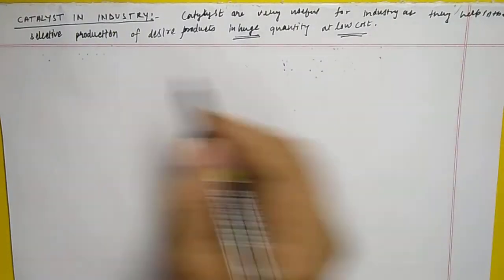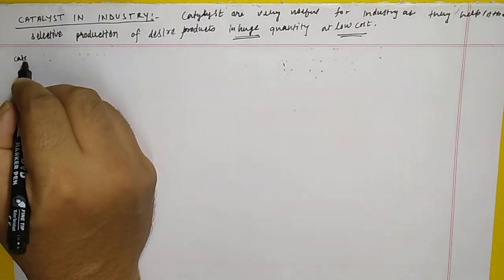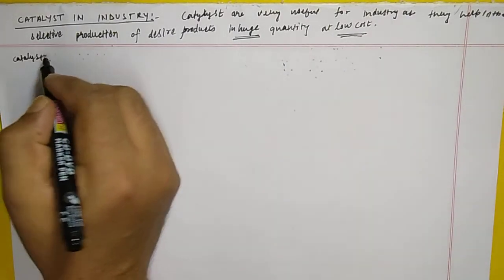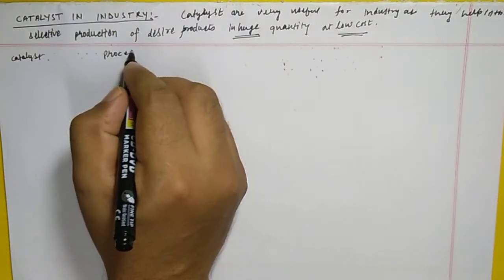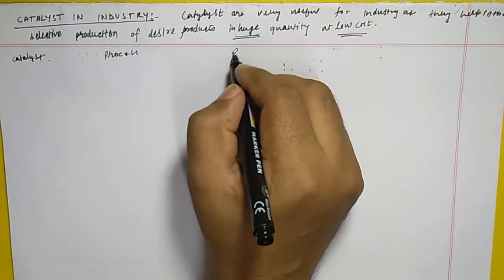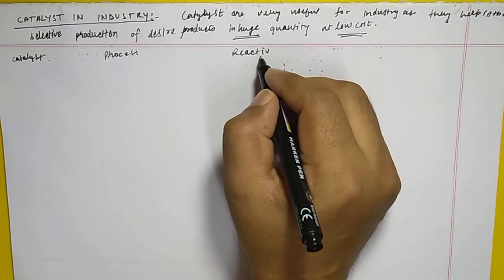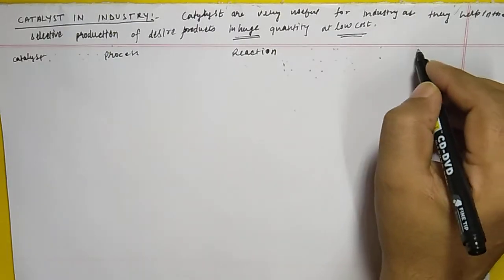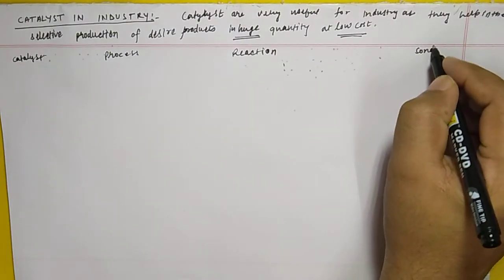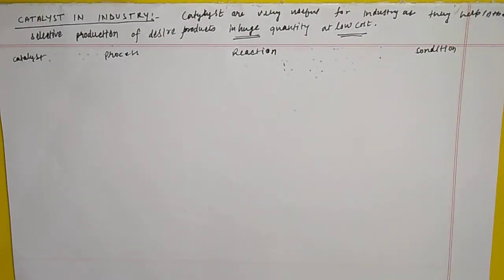Here I'm writing a table with four columns: the first column is the catalyst, the second column is the process, the third column is the reaction, and the fourth column is the condition — that is, what is the temperature of the reaction.